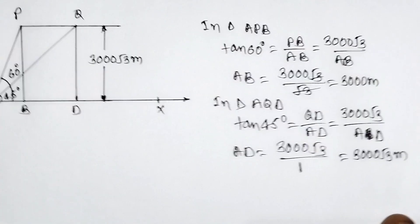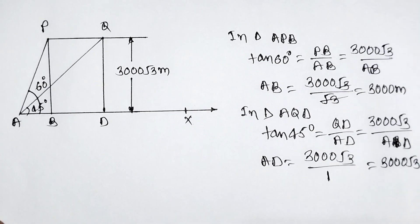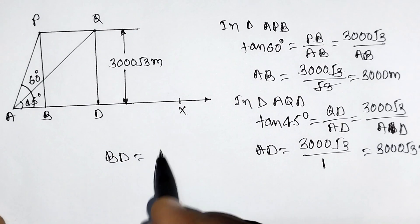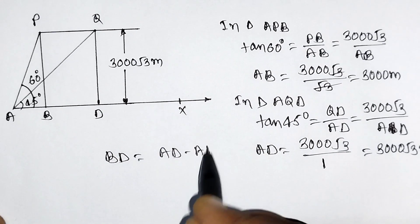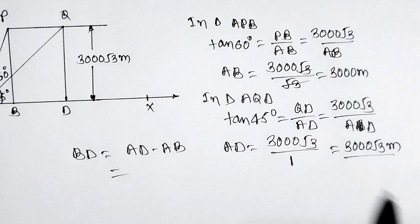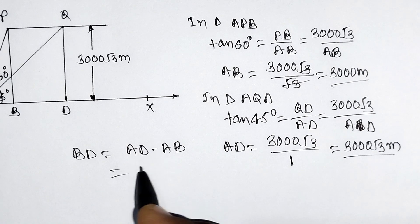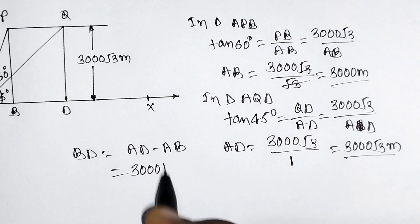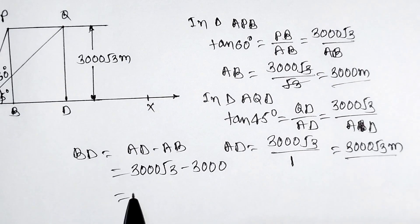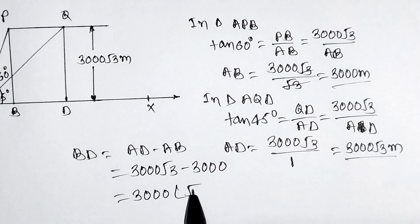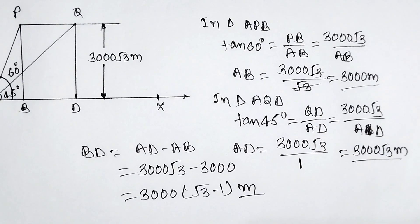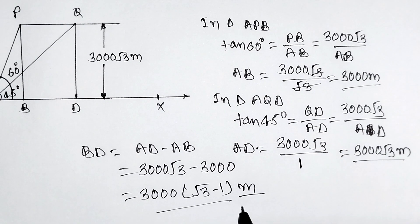Now we find BD, the distance traveled. BD = AD − AB = 3000√3 − 3000 = 3000(√3 − 1) meters. This is the answer for Question R — the plane travels 3000(√3 − 1) meters in 15(√3 − 1) seconds.